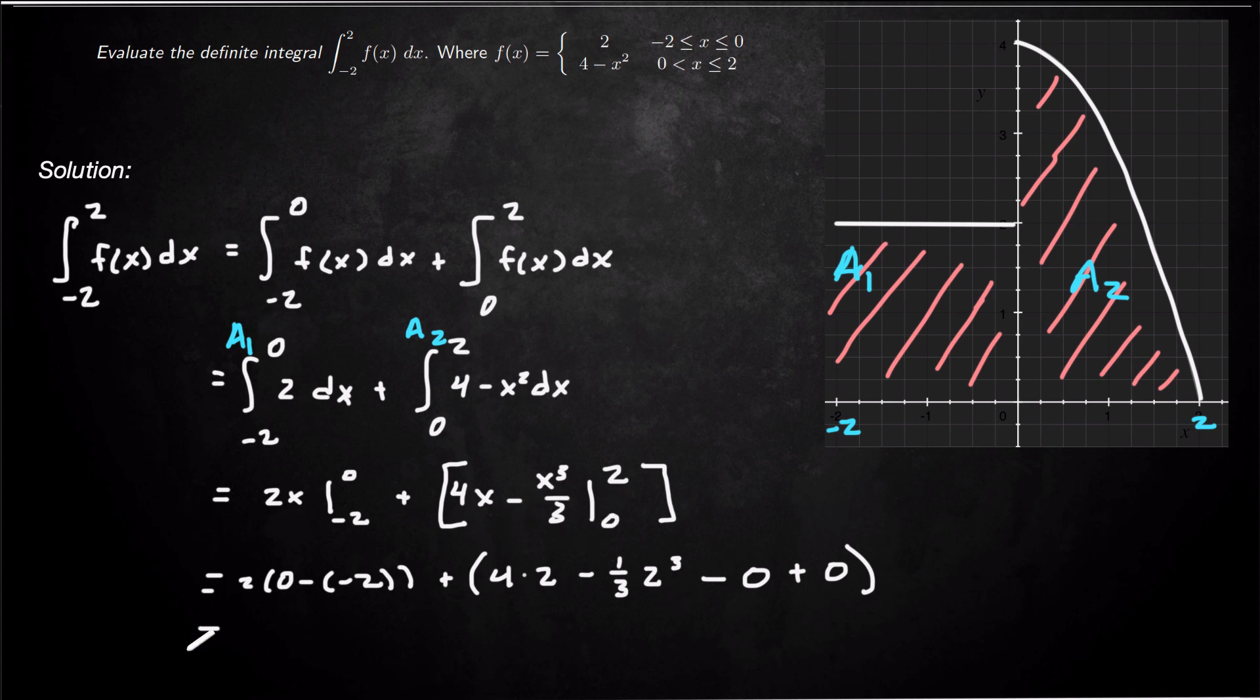Alright so this becomes 2 times 2 which is 4 plus, and then here we have 8 minus, and then 2 cubed is 8 so that's 8 thirds. So 4 plus 8 minus 8 thirds, that's 12 minus 8 thirds which is 36 minus 8 thirds or 36 over 3 minus 8 over 3 which is 28 over 3 and that's our answer.